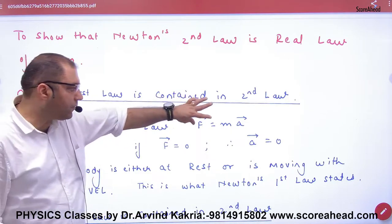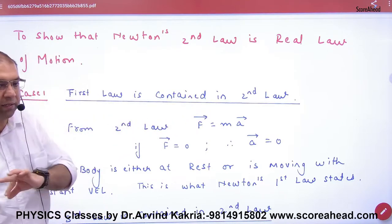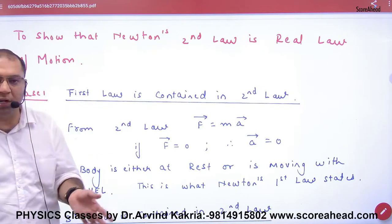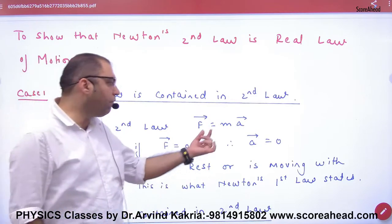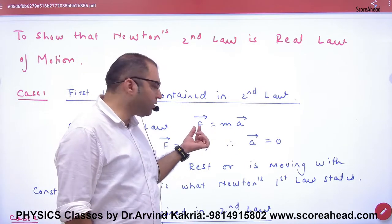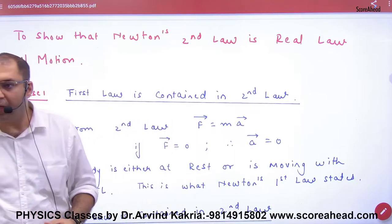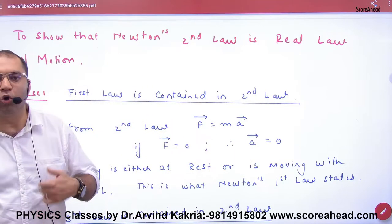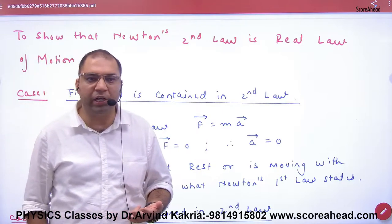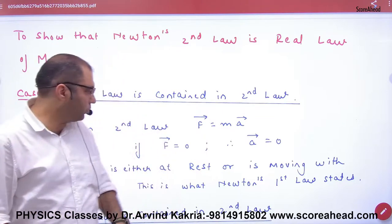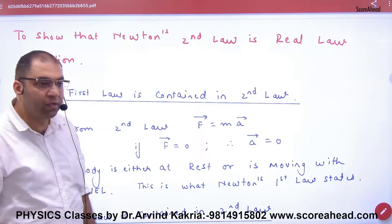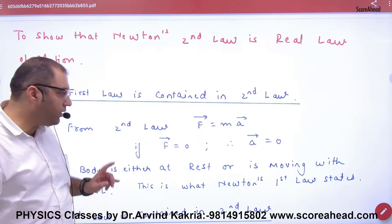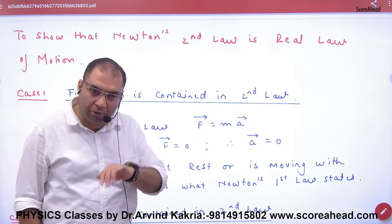If you think this force does not act on the body, if no external force is acting on the body, then obviously mass will not be zero. Then what will be A vector? Zero. Acceleration is zero, there are two meanings. First meaning, either the body is at rest, or the body is moving with constant velocity.